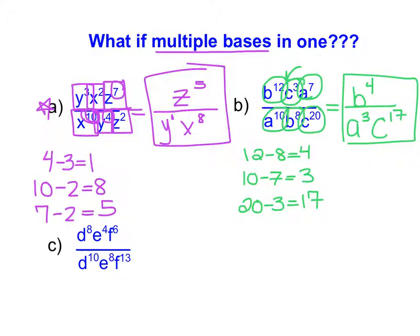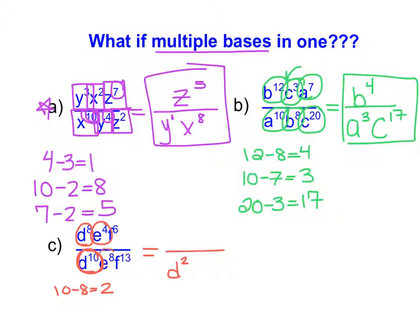In part C we have d's, e's, and f's. Focusing first on d's: I have d to the 8th and d to the 10th. 10 minus 8 leaves us with 2, and because the 10 is larger, we're going to have d to the power of 2 in our denominator. Then focusing on e: I have e to the power of 4 and e to the power of 8. 8 minus 4 leaves me with 4 e's, and because the 8 is bigger and in the denominator, we're going to have e to the power of 4 in our denominator.